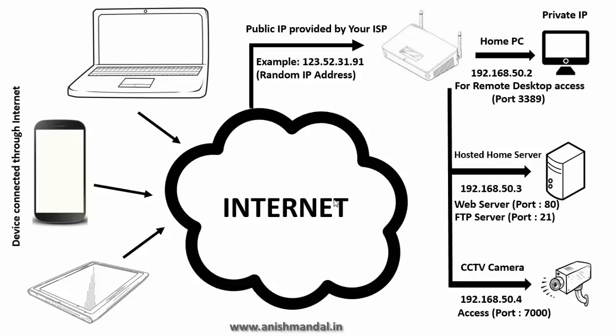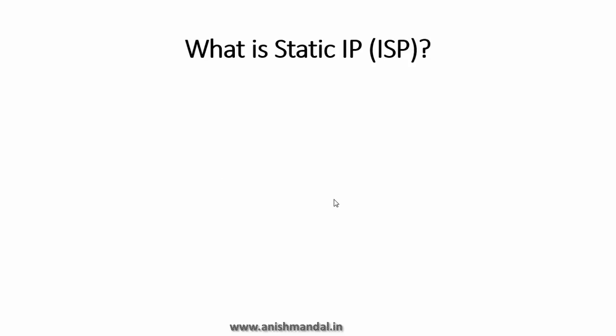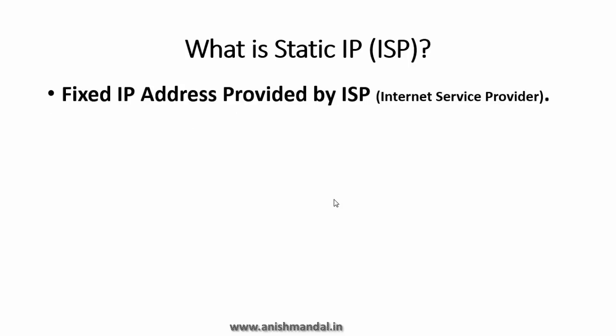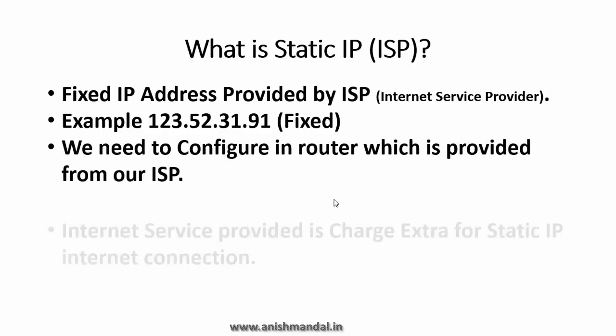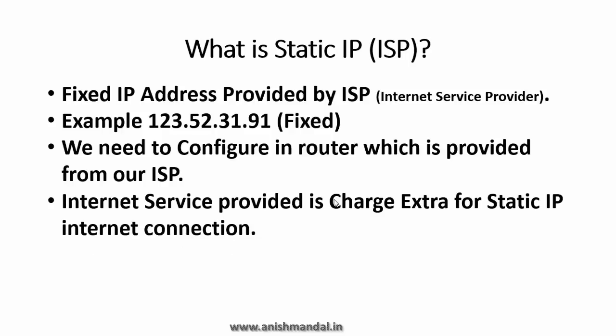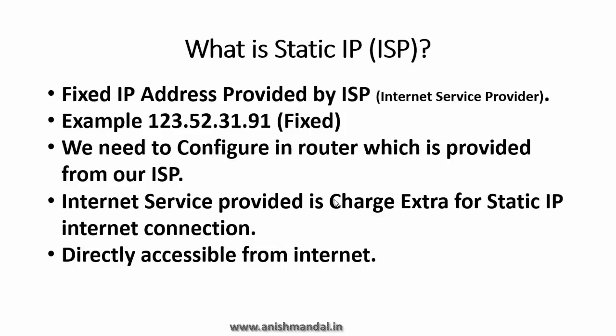Before we proceed, we need to know about the different types of IP addresses provided by your ISP. The first is a static IP address — a fixed IP address provided by your ISP, for example 123.52.31.91. It is a fixed IP address which we configure in our router. Your ISP may charge extra if you require a static IP. The benefit is that you simply use any internet-enabled PC or laptop, type this static IP, and connect to your home network — it is directly accessible from the internet.